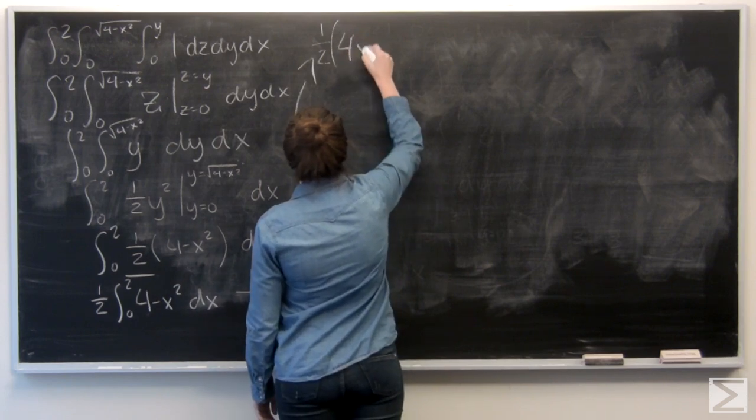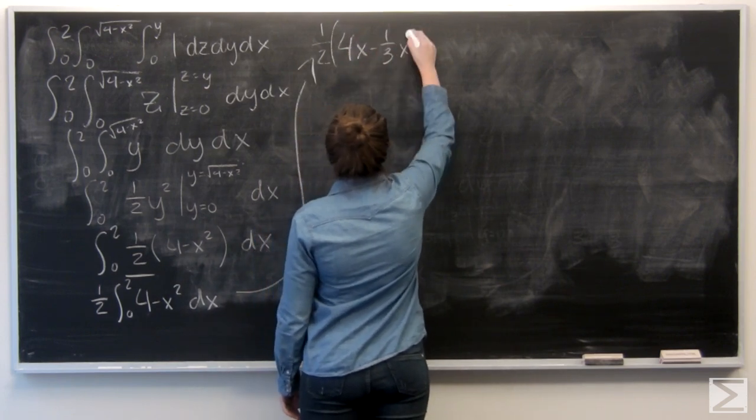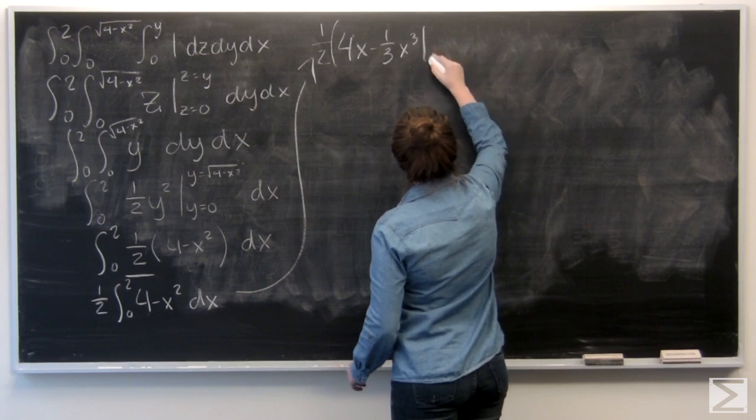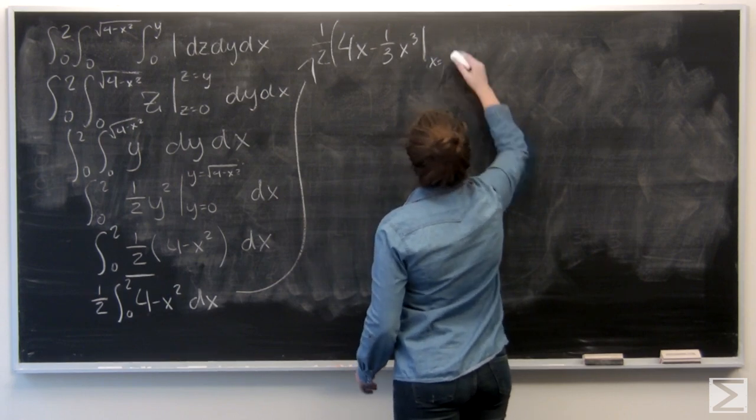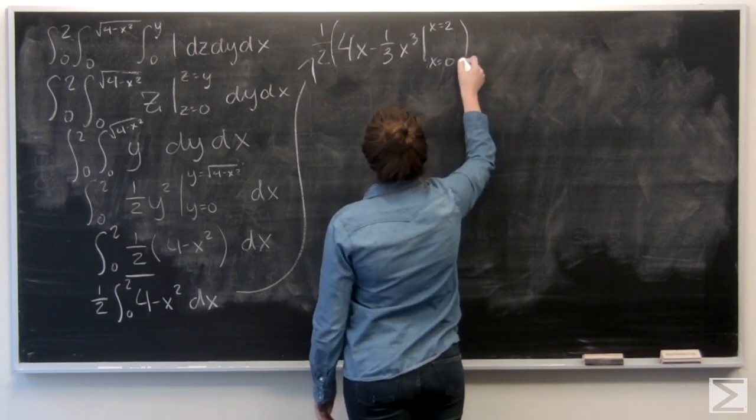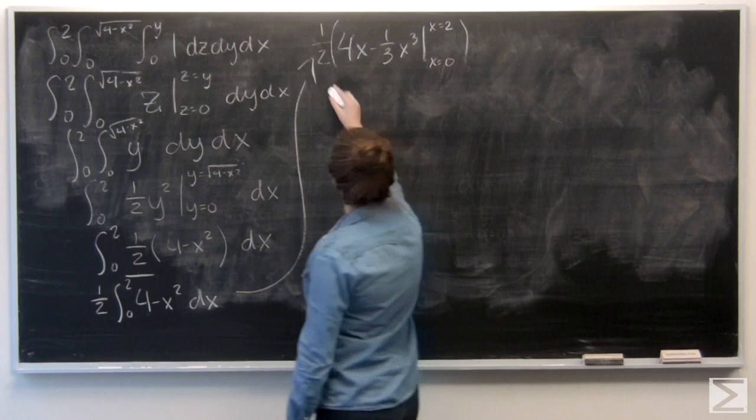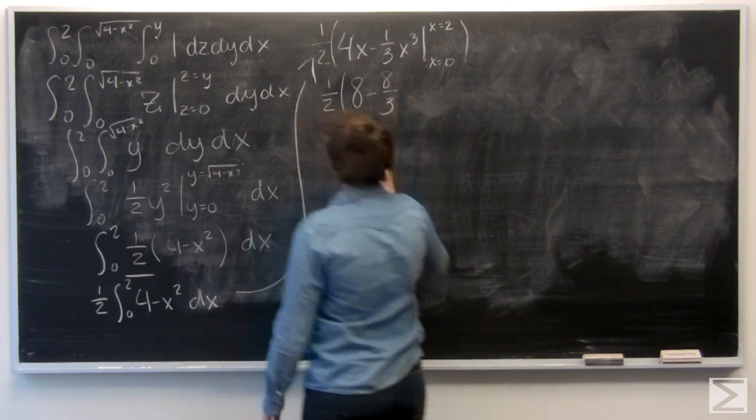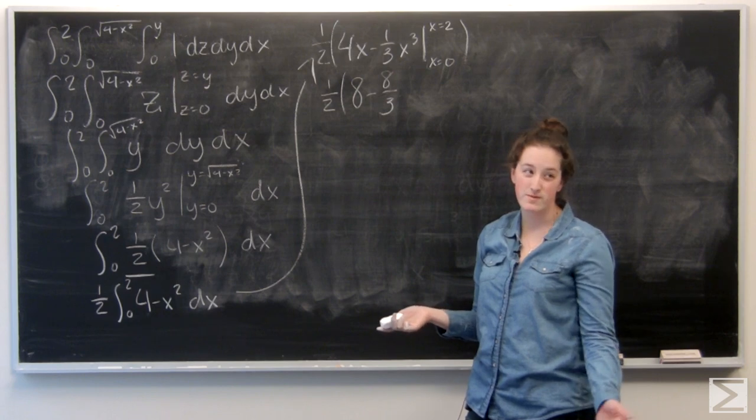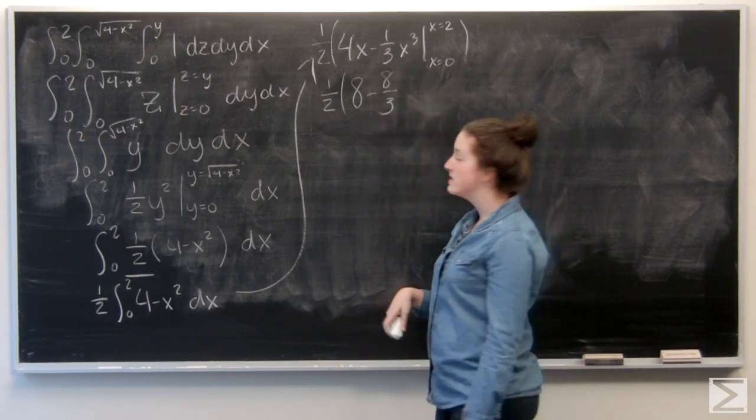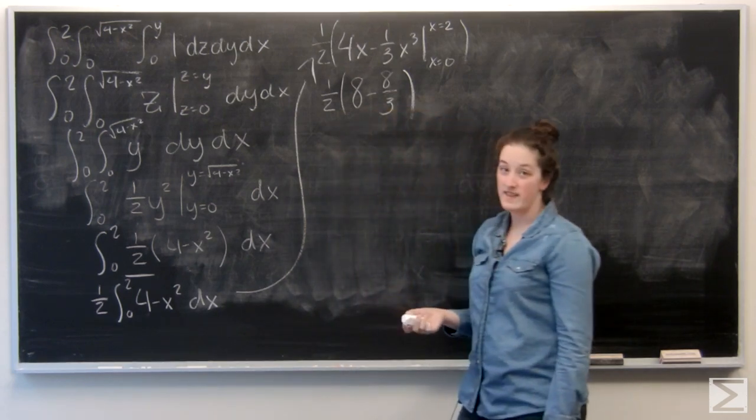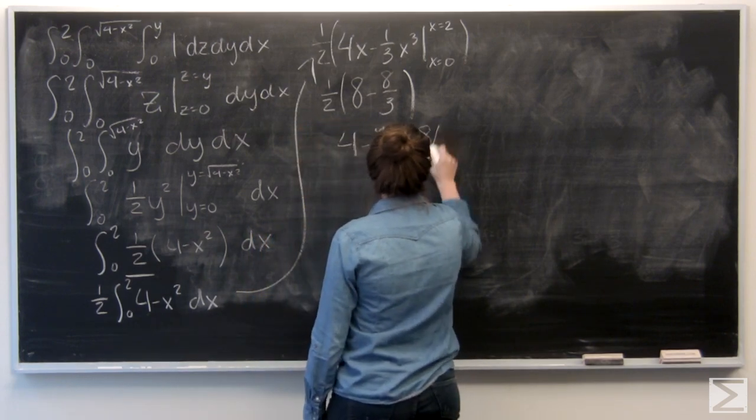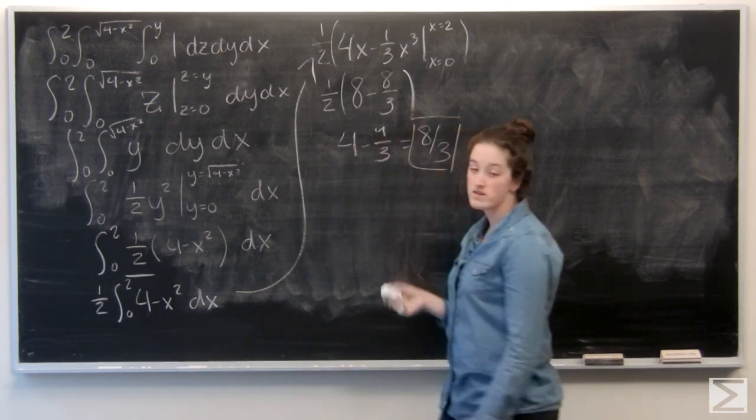Keep that 1 half. So, 4x. And I'm evaluating x from 0 to 2. So, plug in a 2 everywhere I see an x. Keep my 1 half. So, now I want to plug in a 0 everywhere I see an x, which doesn't really get me anything. Because those terms are just going to be 0. So, I'm looking at 1 half times 8 minus 8 thirds. So, 4 minus 4 thirds. 8 thirds. So, that's my volume.